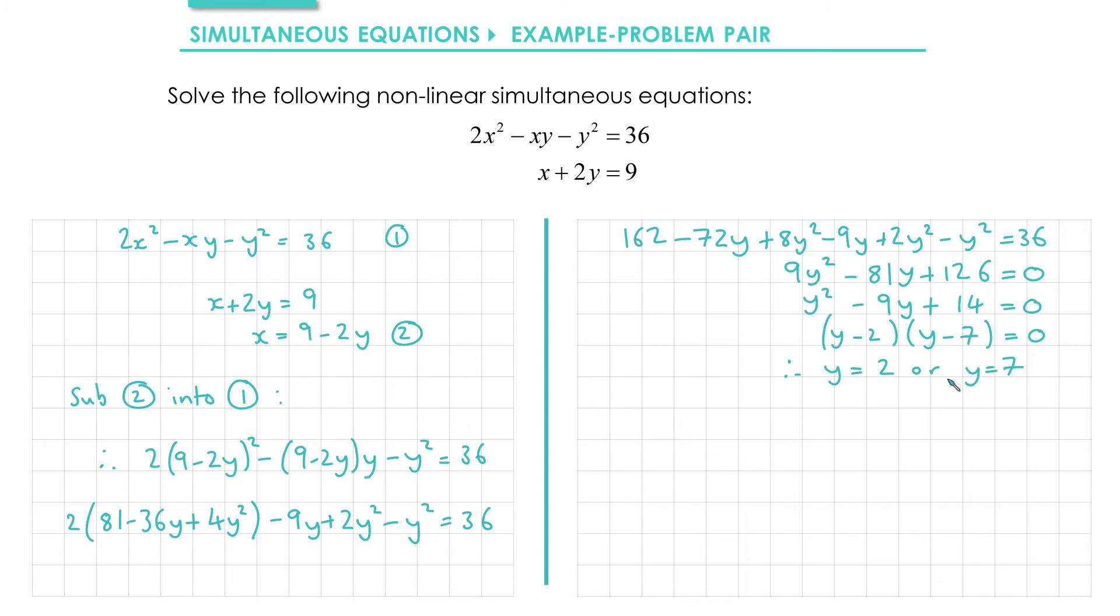So we now have our y values, but for each y value there will be a corresponding x value. To find the x values, we can substitute each value of y into either of these equations, or even a rearranged version. In general though, it's usually far easier to substitute into the linear equation. So I'm going to sub y = 2 into equation 2. That gives me x = 9 - 2 lots of 2, which is 5.